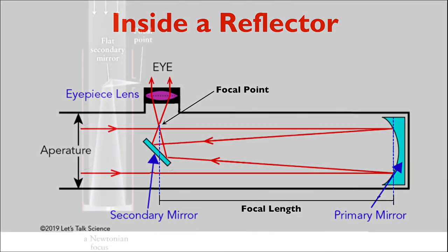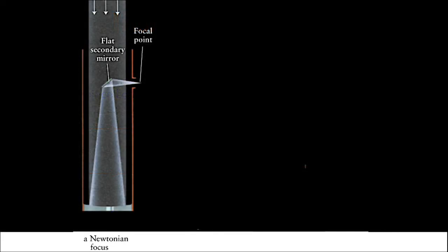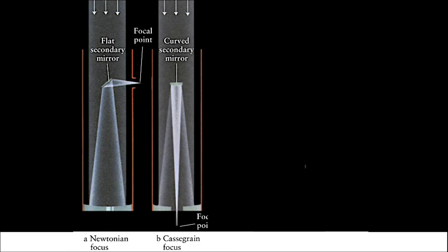In addition to the Newtonian focus, there are several other designs for reflecting telescopes. The Schmidt-Cassegrain or simply Cassegrain focus reflects light off of a primary mirror at the bottom of the tube onto a secondary curved mirror, which then redirects the light directly through a hole that's been cut into the middle of the primary mirror so that it can go into the eyepiece.